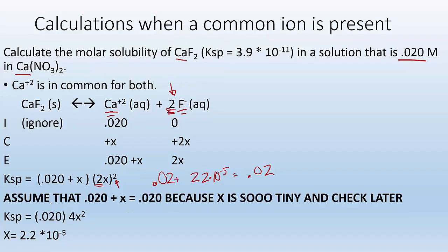I solve for x. I get 2.2 times 10 to the minus 5. And now I check if I did 0.02 plus 2.2 times 10 to the minus 5. What do I get? I still get 0.02 when I round to sig figs and all that. So our assumption was good and safe to do. So we solved that. x, how much, what's the molar concentration of calcium fluoride in that solution? It's only going to be 2.2 times 10 to the minus 5. Where are my units? Molar. That's it.